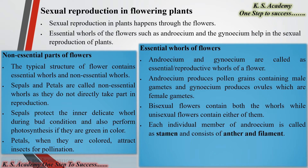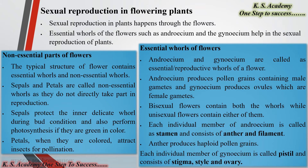Each individual member of the androecium is called a stamen and consists of an anther and a filament. The anther produces haploid pollen grains. Each individual member of the gynoecium is called a pistil and consists of the stigma, style, and ovary — these are the female gamete structures.